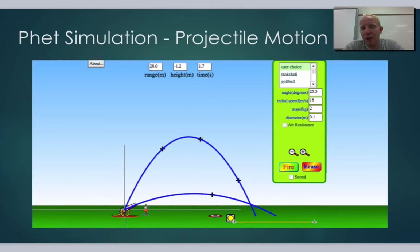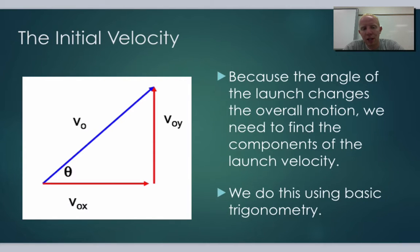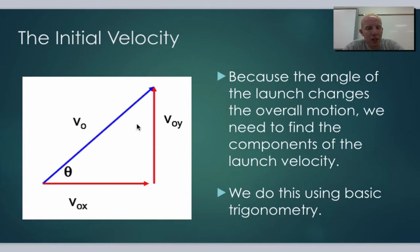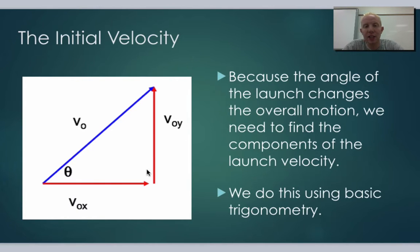In order to do that, we have to think about the angle components of the velocity. Because the angle of the launch changes the overall motion, we need to find the components of the launch velocity using basic trigonometry. If we have some angle the projectile is launching at, before we just needed to know the velocity — but because we have the angle, now we need two different components: the y velocity and the x velocity.